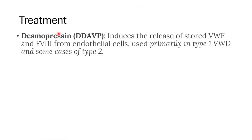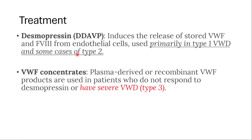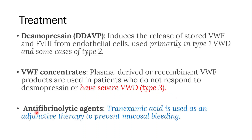For treatment, we might use desmopressin, which induces the release of stored von Willebrand factor and factor VIII from endothelial cells, used primarily in type 1 and some cases of type 2. Von Willebrand factor concentrates — plasma-derived or recombinant products — are used in patients who do not respond to desmopressin or have severe type 3. Antifibrinolytic agents like tranexamic acid are used as adjunctive therapy to prevent mucosal bleeding.